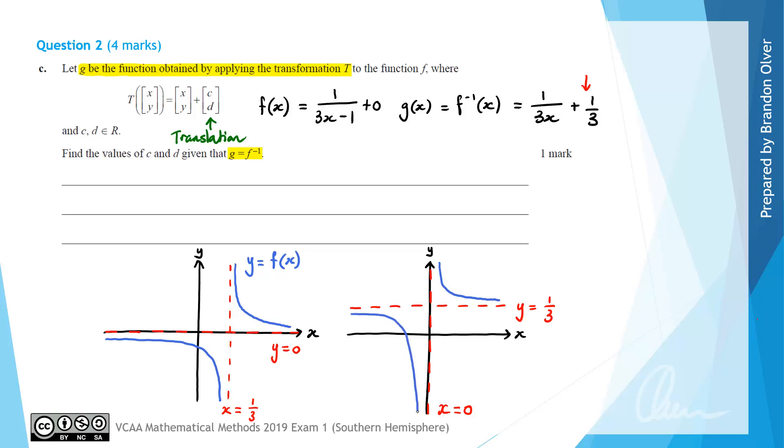Now hopefully you can see that we need to translate the graph 1/3 units in the negative x direction, which is what the c value is going to do. So we need c to equal negative 1/3. We also need a translation of 1/3 units in the positive y direction. d is responsible for that, so we need d to equal positive 1/3. Those are the answers for part c.